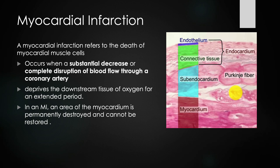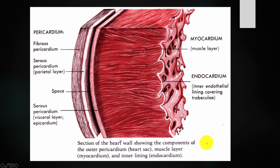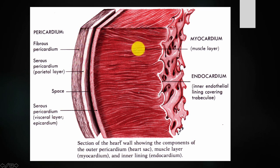The heart's healthy myocytes are going to have to double the work to compensate for injured ones. Here's another depiction showing the pericardium on the outside, and then the myocardium — this middle muscle layer — which becomes damaged due to disruption in blood flow, limitation in oxygen, and apoptosis or necrosis of the cardiomyocytes.